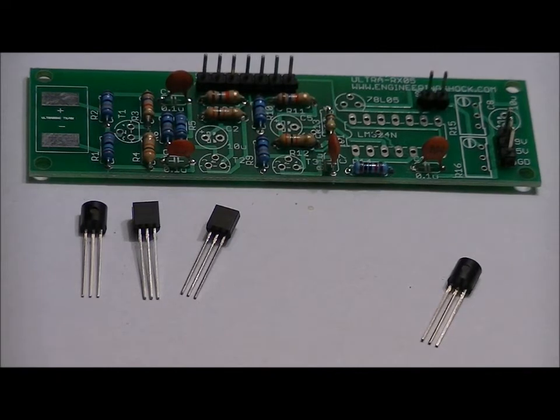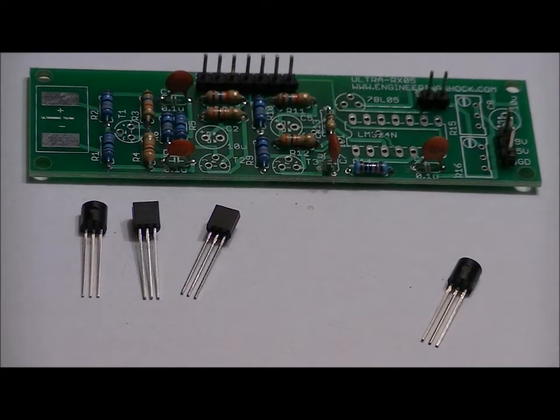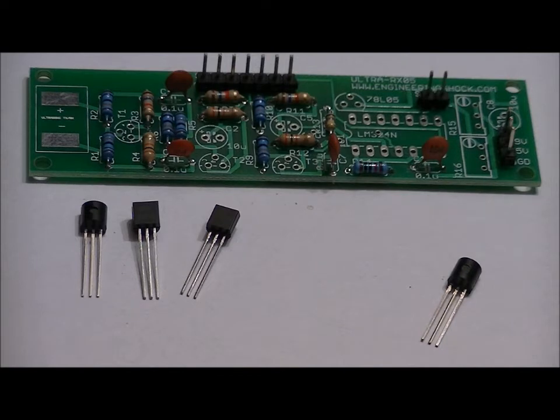It's very important to note that the 78L05 5V regulator and the 3 NPN transistors look the exact same. They all have writing on them. Make sure that you separate your 2N2222 transistors from the 78L05. So let's solder in our single 5V regulator, the 78L05.